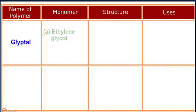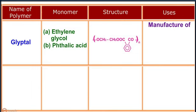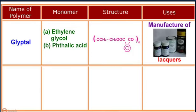Glyptyl: the monomers are ethylene glycol and phthalic acid. It is used in the manufacture of paints, lacquers, etc.